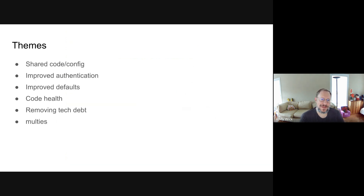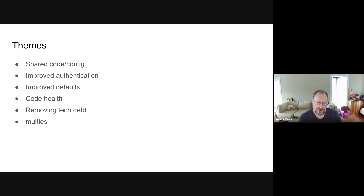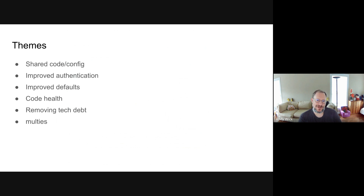The main themes of the 5.0 release are really just improving the code base, making it easier to do things, and sharing code between all of our different tools. We have a lot of tools — around eight different tools that used to not do the best job sharing code. Now with 5.0, we've really made everything just one way to do things across all of our tools.